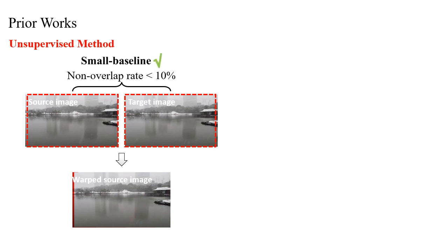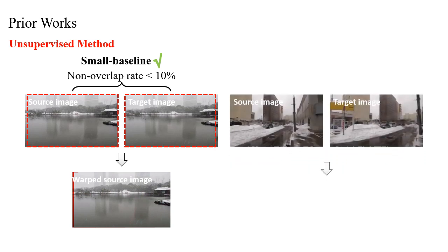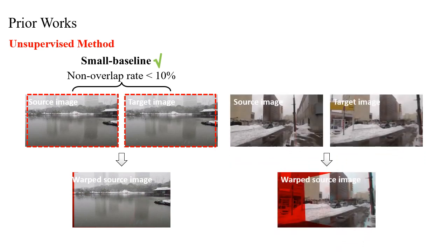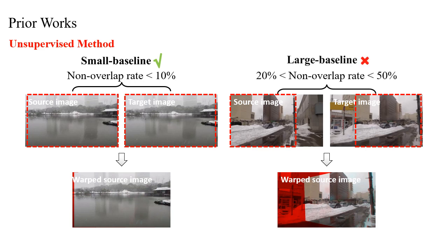where the non-overlap rate between two images is less than 10%. However, in large baseline scenes, where the non-overlap rate is between 20% and 50%, the warped source image contains plenty of out-of-boundary pixels due to the large appearance and viewpoint changes, causing it hard to minimize the photometric distance.